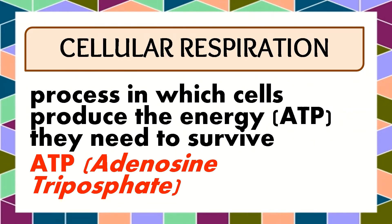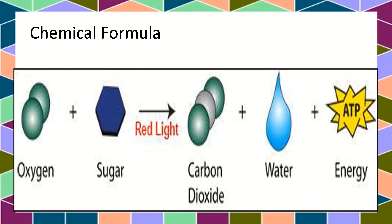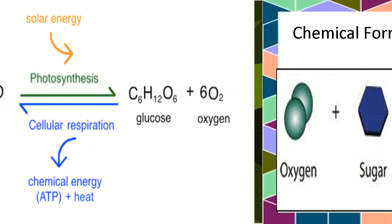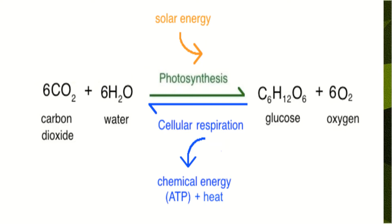ATP stands for adenosine triphosphate. The whole chemical formula for cellular respiration is different from photosynthesis. Oxygen and sugar are needed, and as it is digested, we produce carbon dioxide, water, and energy in the form of ATP. So basically, it is an inverse chemical formula for photosynthesis — the reverse of photosynthesis is cellular respiration.